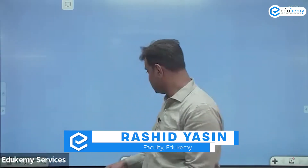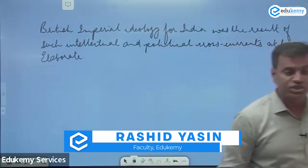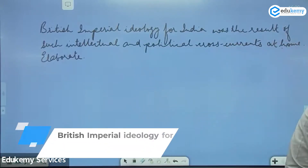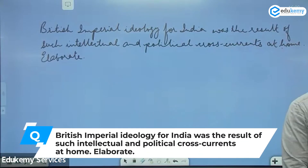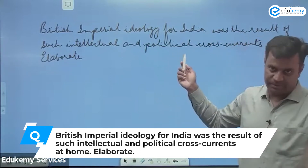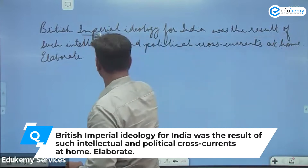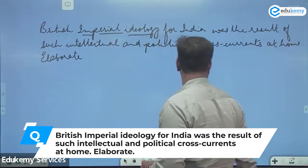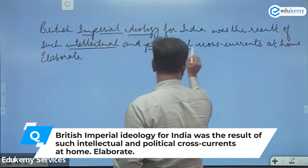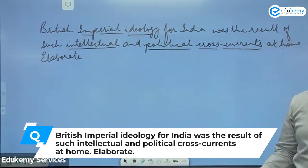The first question to be discussed is: British imperial ideology for India was the result of such intellectual and political cross currents at home — meaning in Britain, in British society.